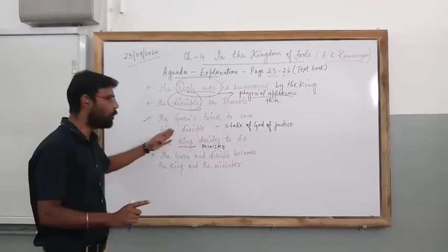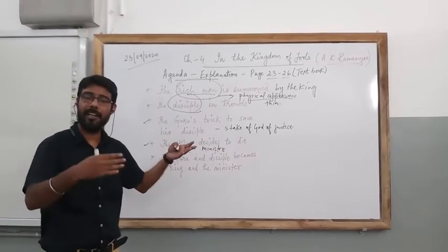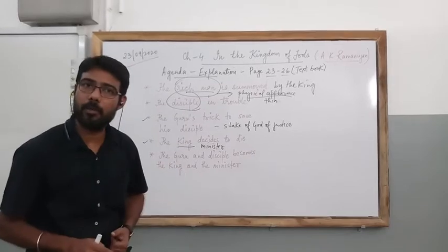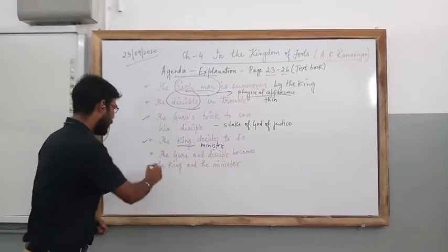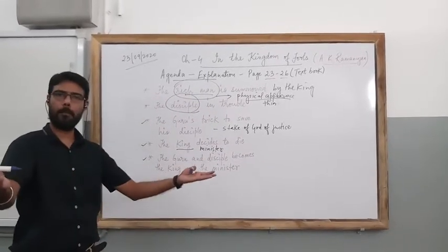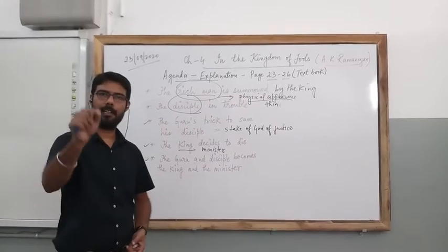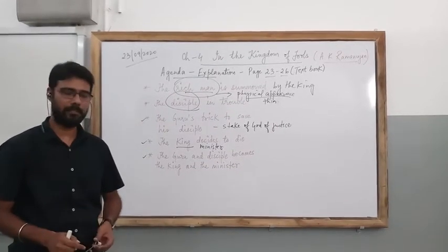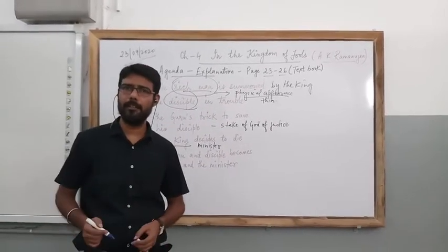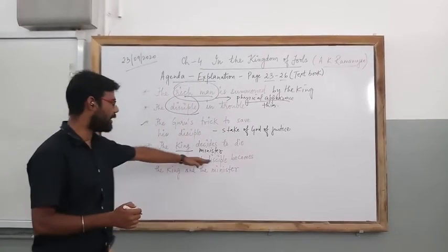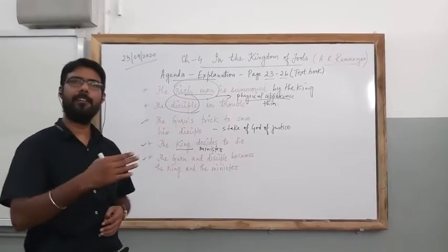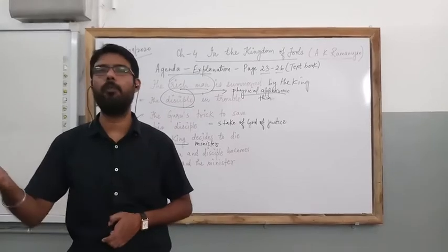Did the guru apply any logic? Did he try to prove that the disciple was innocent? No. Ultimately, the people of the kingdom find the king and the minister dead. They take out the body, and the guru and disciple secretly shift from there and were moving.